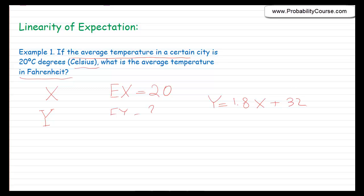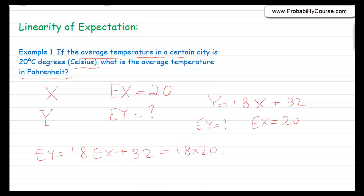So if I give you a temperature in Celsius, you can convert it to Fahrenheit. We know that the expected value of x is 20, and the question is what is the expected value of y? We guess that probably we can write E[y] = 1.8·E[x] + 32, which is 1.8 times 20 plus 32, which is 68.